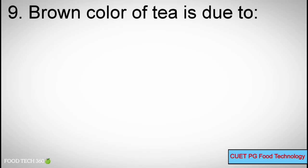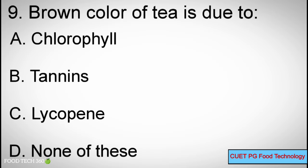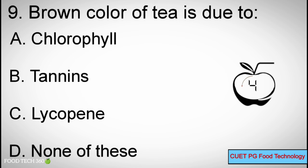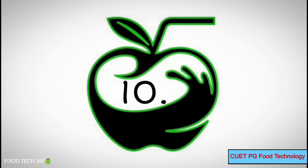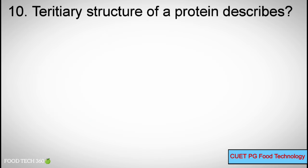Question number 9. Brown color of tea is due to — Options: A. Chlorophyll, B. Tannins, C. Lycopene, D. None of the options. Correct answer: B. Tannins.